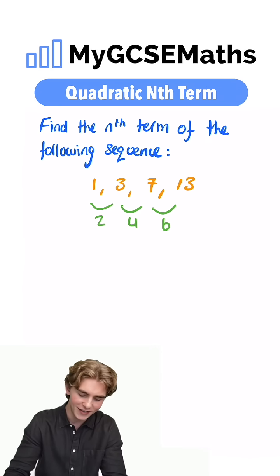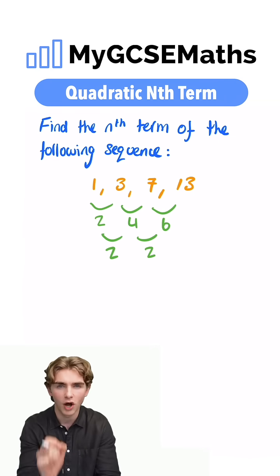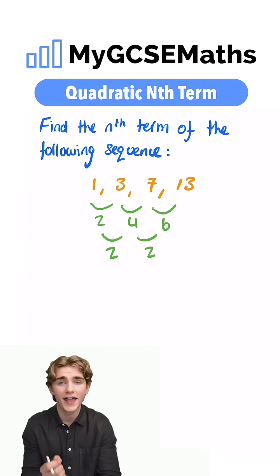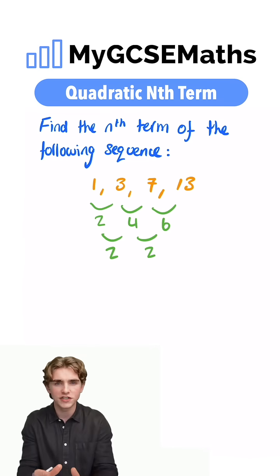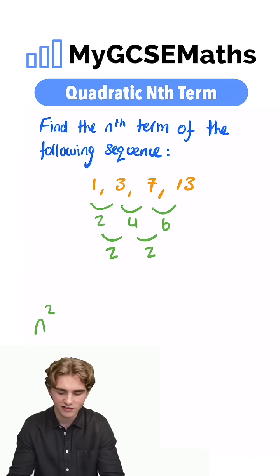Now, we can see that the difference changes, so we're going to need to find the second difference. The second difference here is going to be 2. What next? Well, we're going to take that number 2, and we're going to half it. Half of 2 is 1, and that's going to give us the coefficient of n squared in our quadratic nth term. So we have 1 n squared.